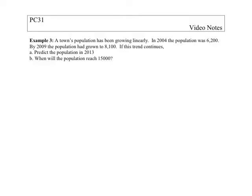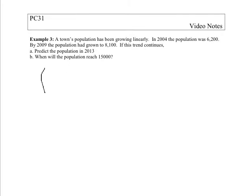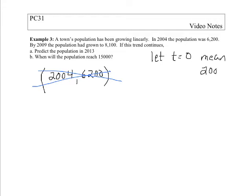Example 3: A town's population has been growing linearly. In 2004 the population was 6,200. By 2009 it's grown to 8,100. So what we have here is in 2004 population was 6,200. 2004 is a big number, maybe it would be easier if we just referenced it from the year 2000. So we're going to say when t is zero that means the year 2000. So then what we actually have is a point at 4,6200 and another point at 9,8100.